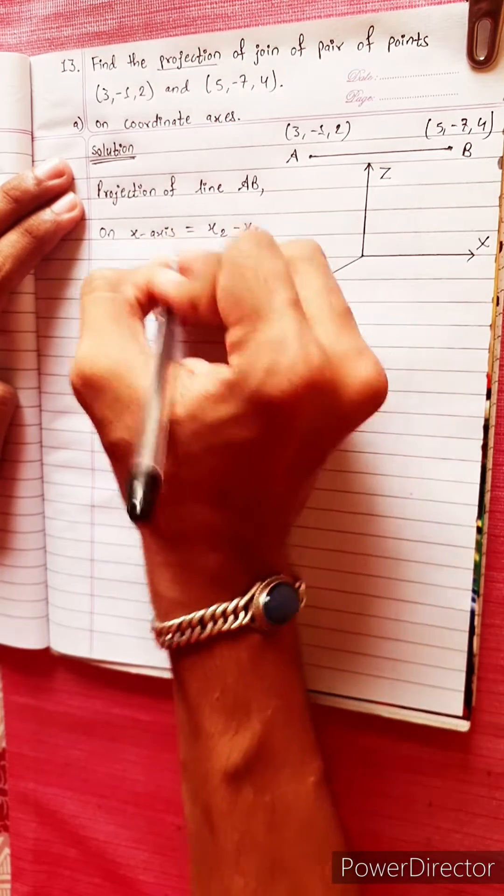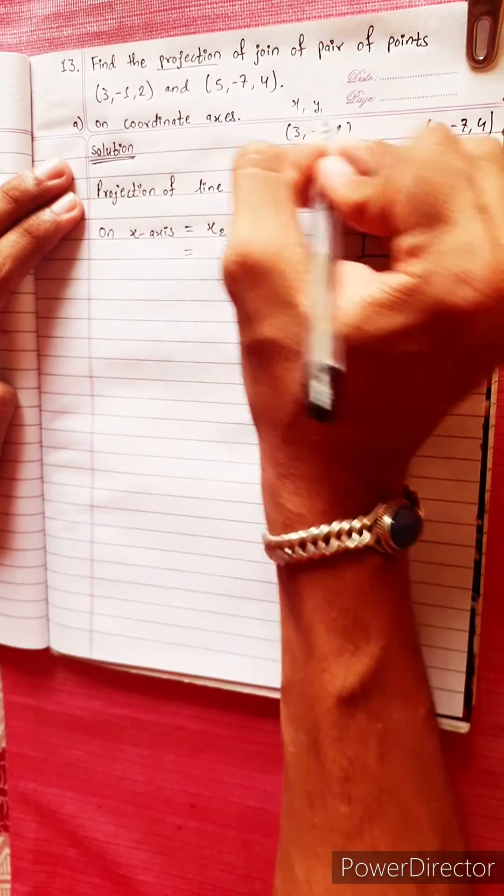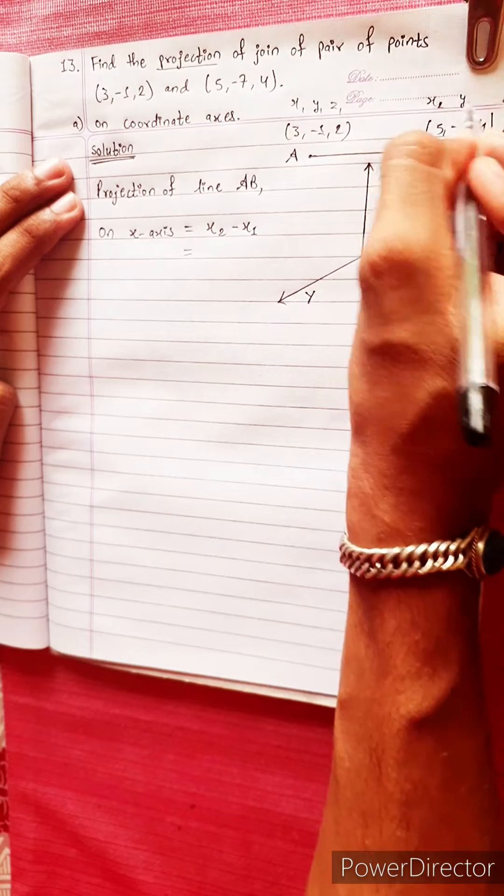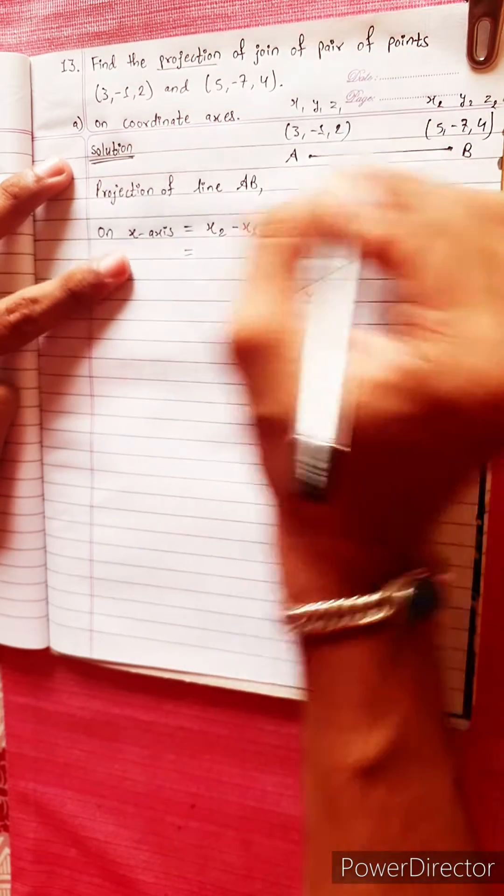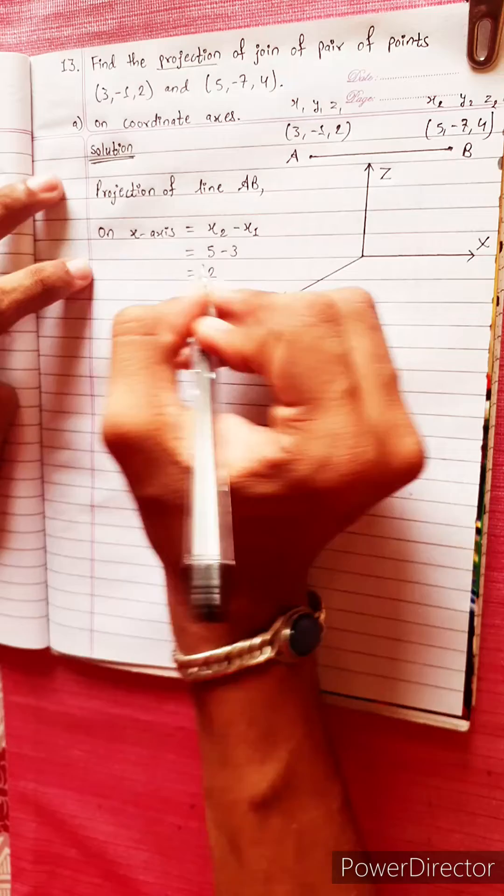x2 minus x1. x1, y1, z1. x2, y2, z2. 5 minus 3. That gives 2.